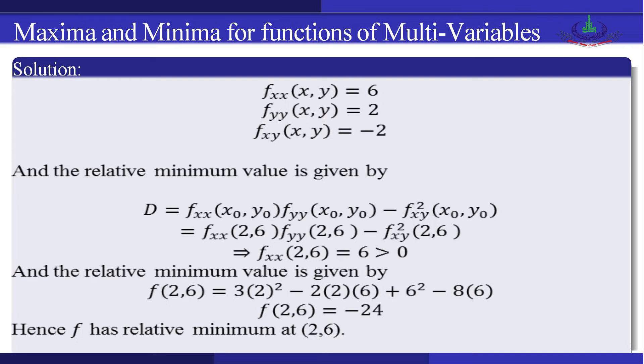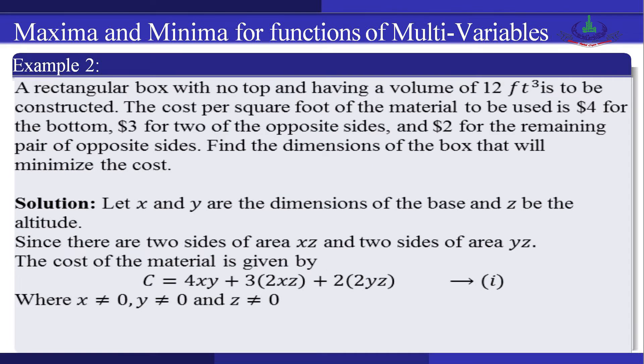Dear students, now we see another example. A rectangular box with no top, having a volume of 12 cubic feet, is to be constructed. The cost per square foot is $4 for the bottom, $3 for two of the opposite sides, and $2 for the remaining pair of opposite sides. Find the dimensions of the box that will minimize the cost.